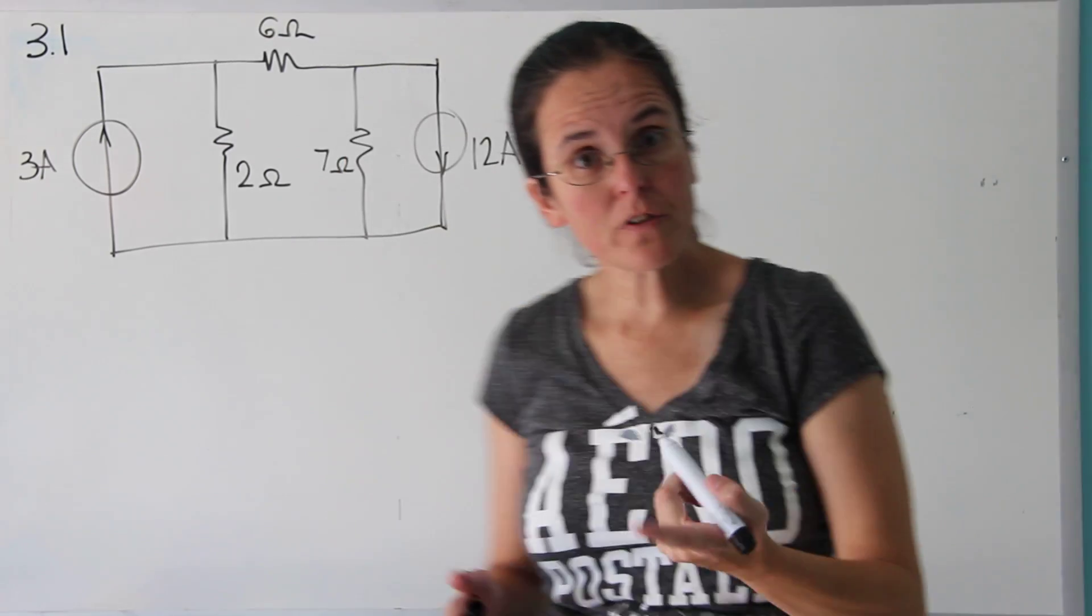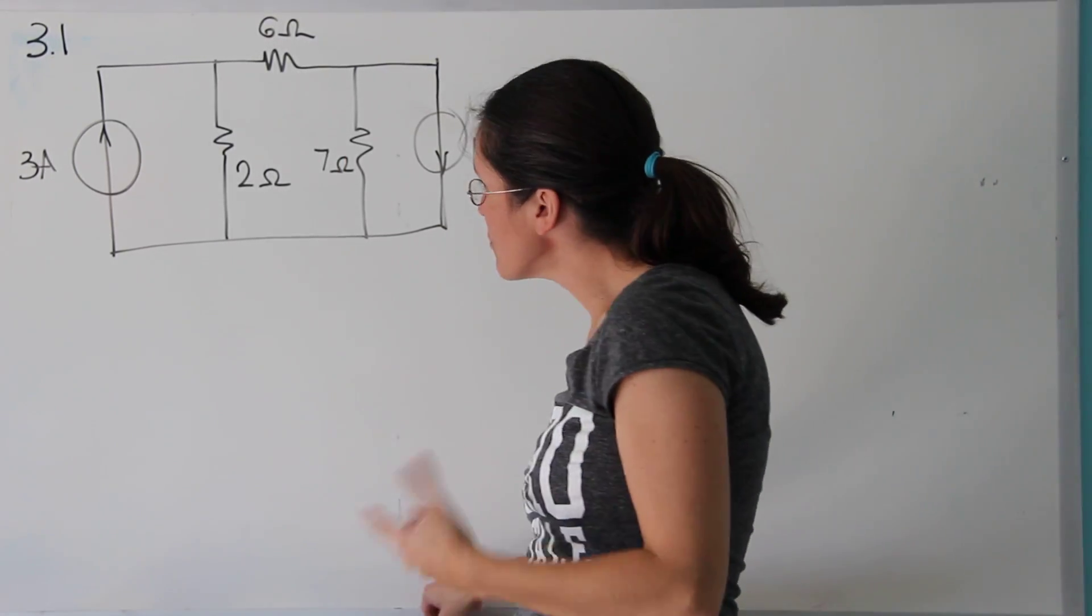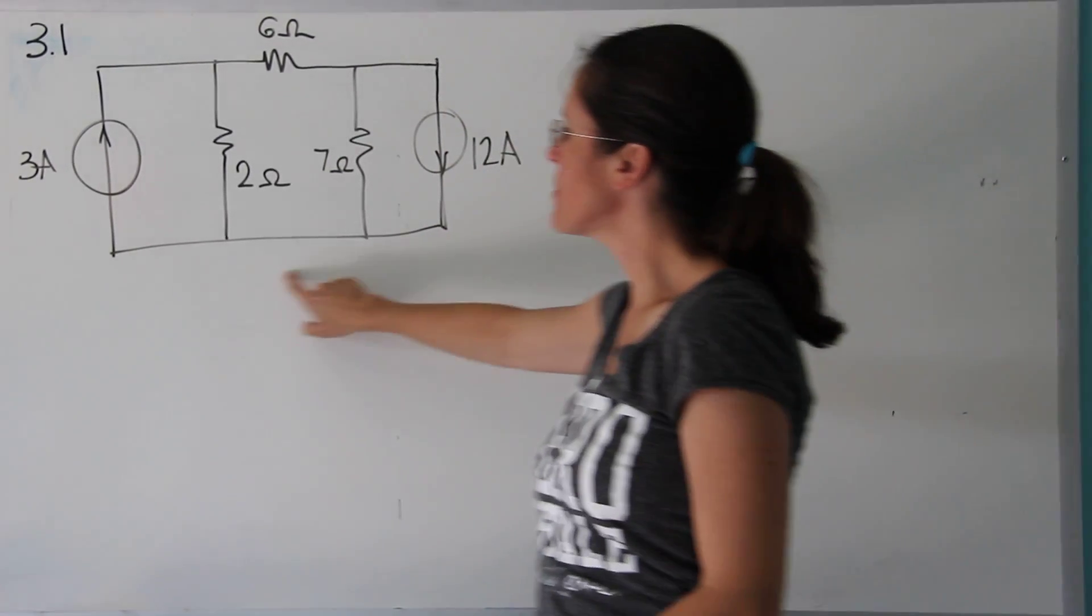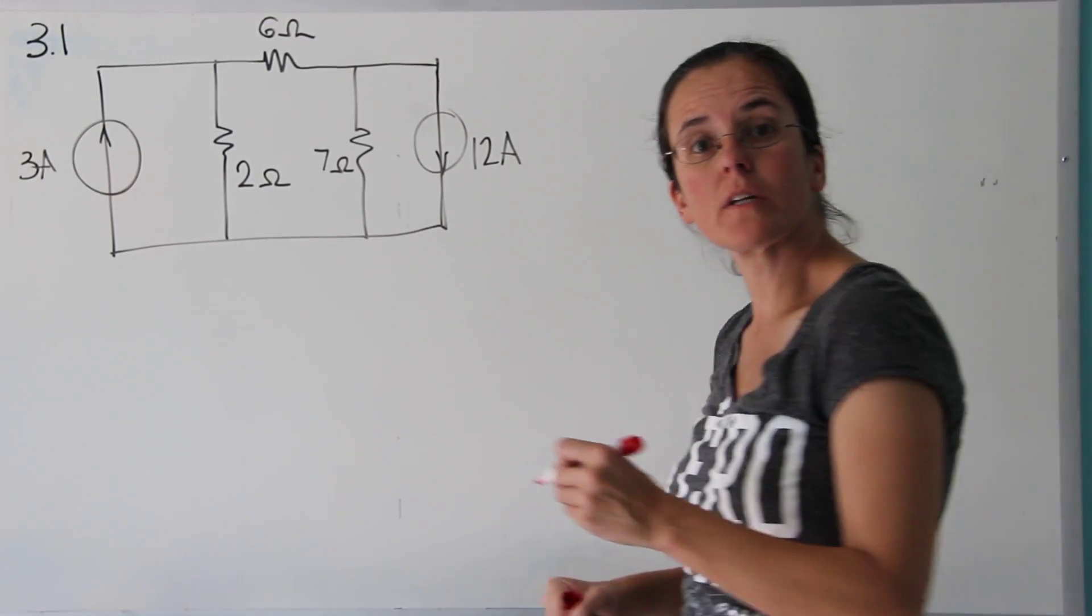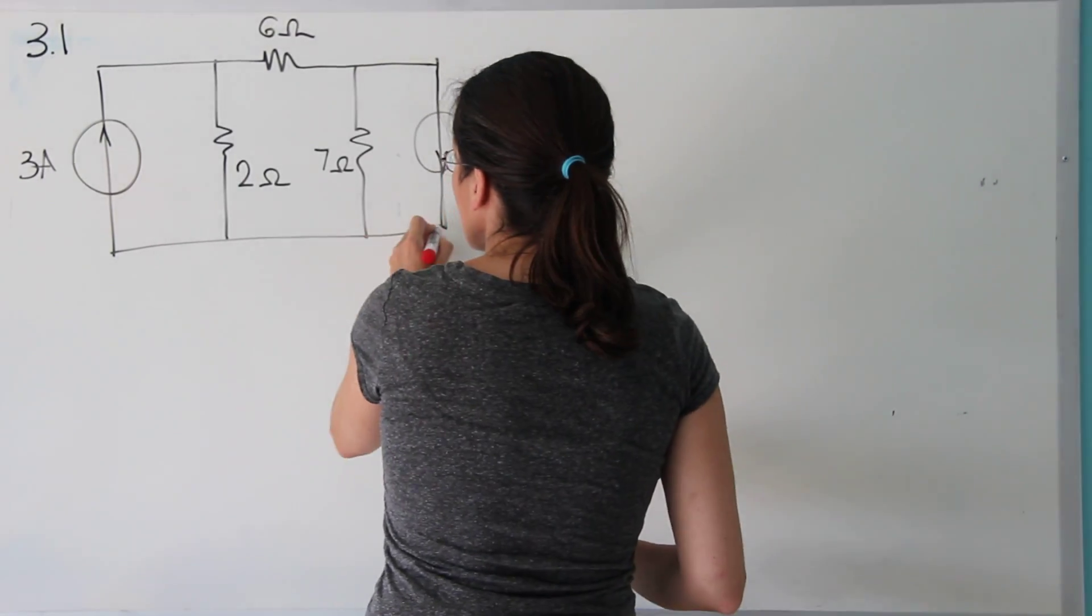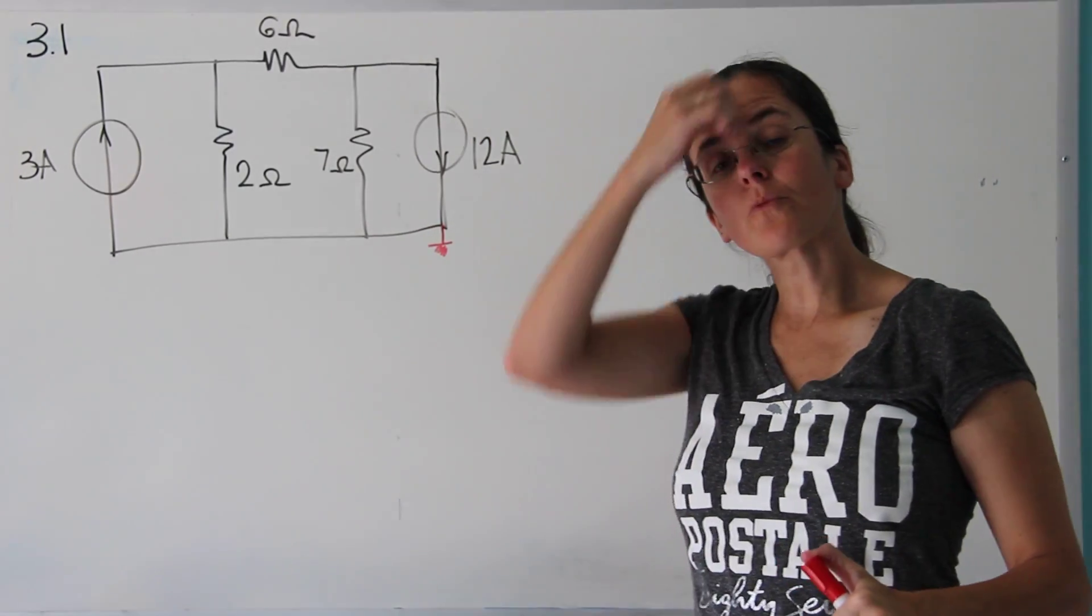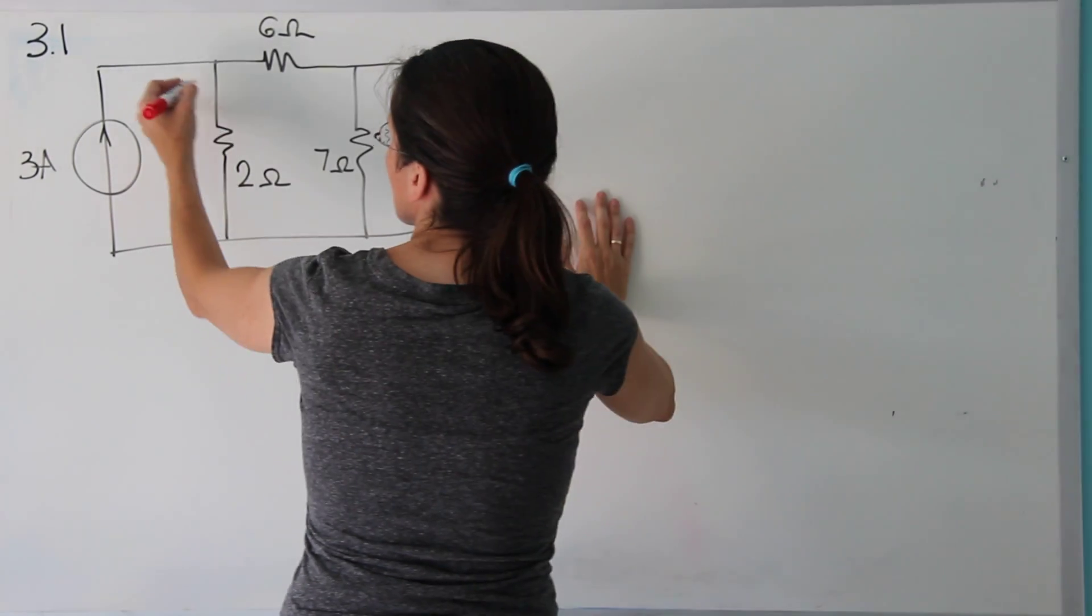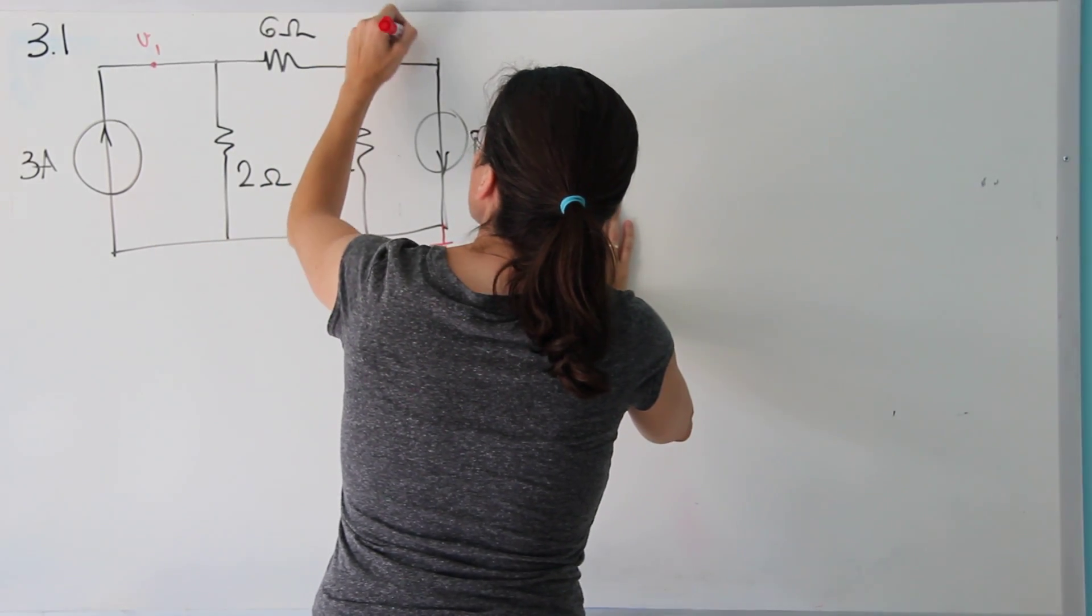So the first thing we do now, and the question is find the node voltages. So usually if you see a circuit with one big node, the largest node in terms of currents coming in and out is the one I'm interested in as a reference. The other two nodes are the ones that are going to give me the equations for the node analysis. So I'm going to call this guy V1 and this guy V2.